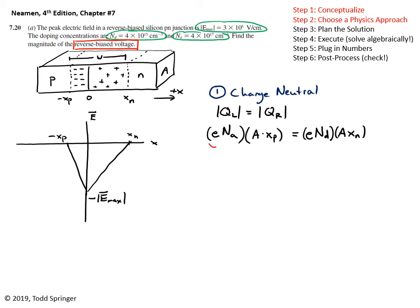And then the same thing goes on the right side, except then instead of Na, I have Nd times A times xn. Again, this is the charge density in that region, the depletion region. And this is the volume of the depletion region on the left side, and the same thing on this side. You can see that this simplifies because the e's cancel and the a's cancel, and I'm left with this useful relationship, which is really worth remembering: xp times Na is equal to xn times Nd.